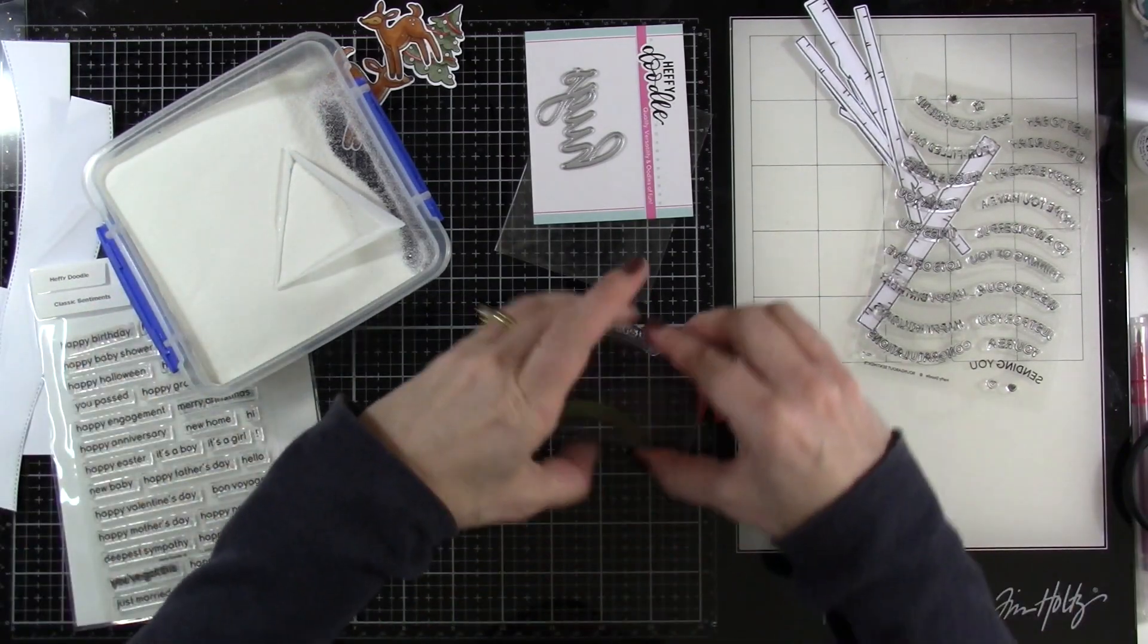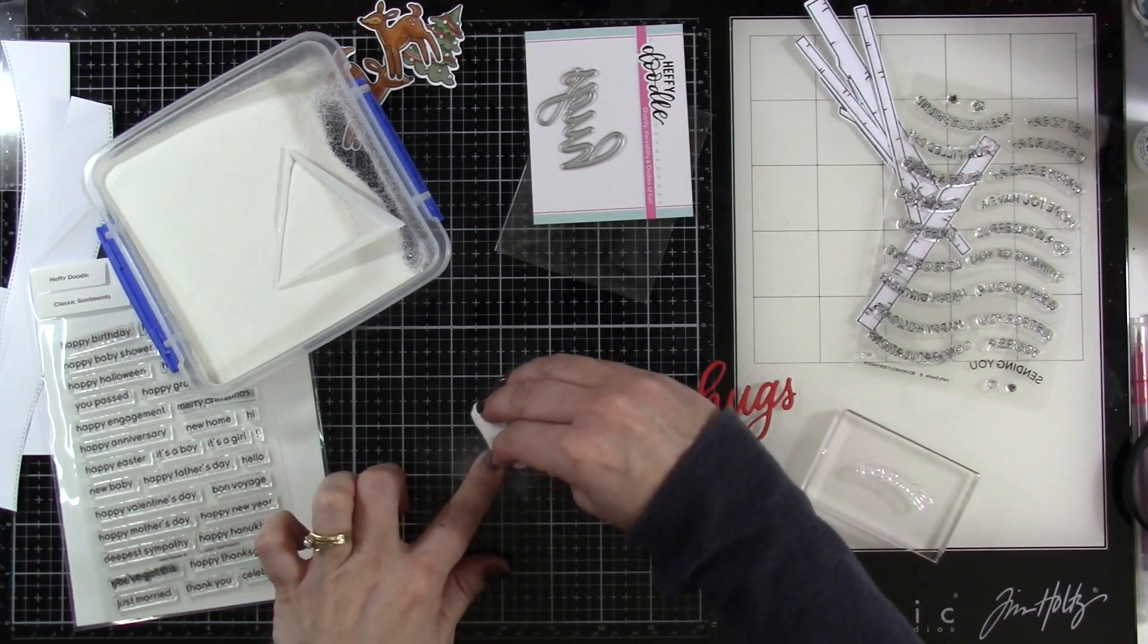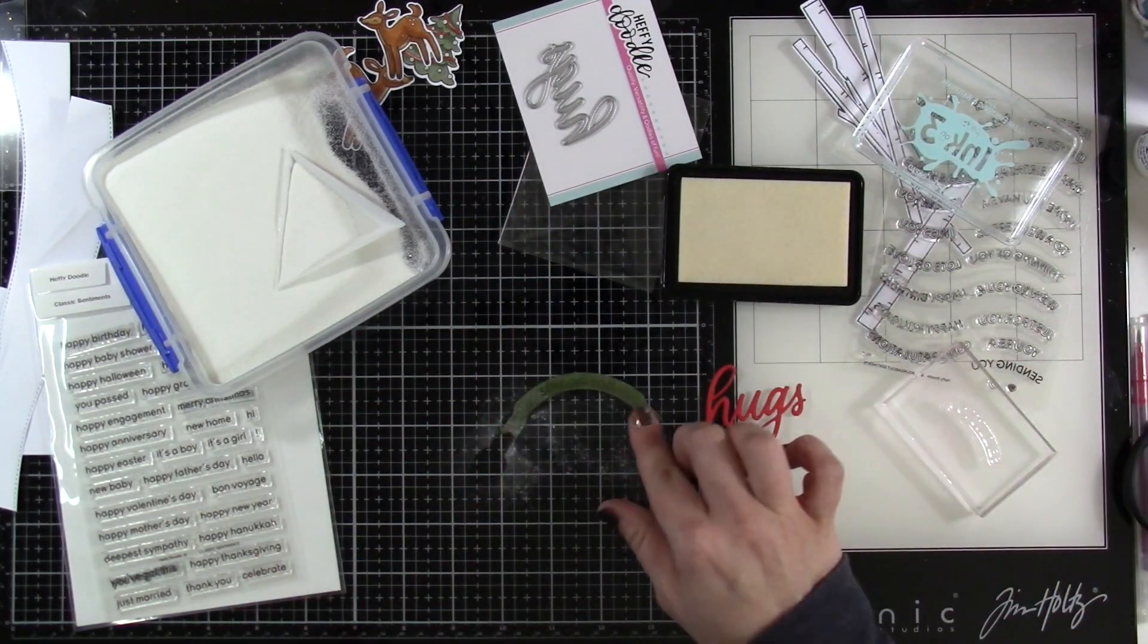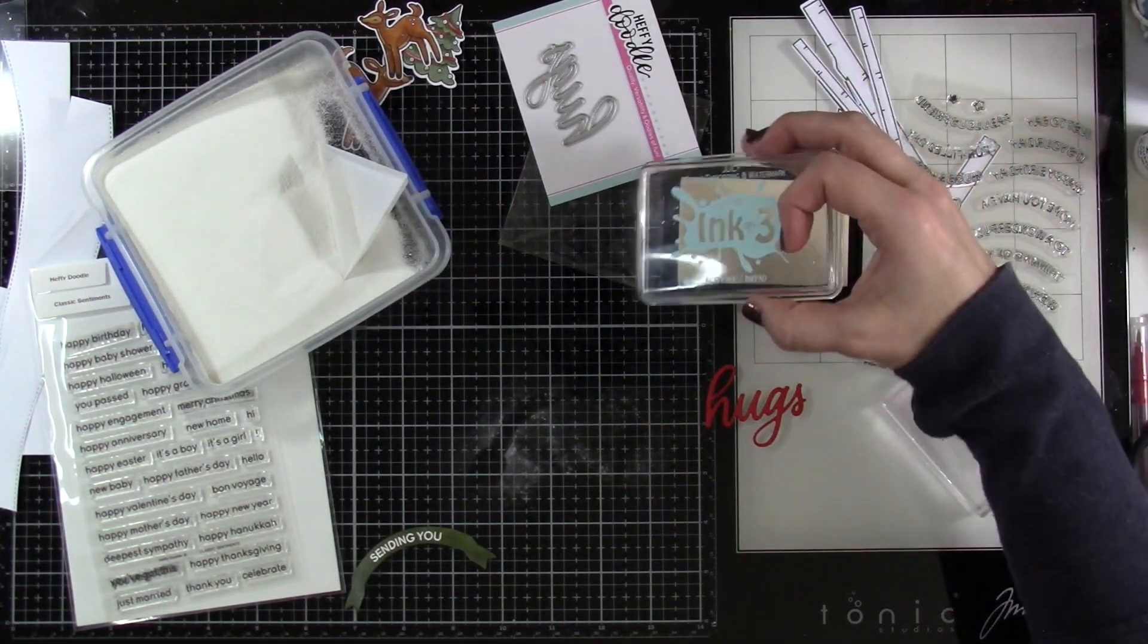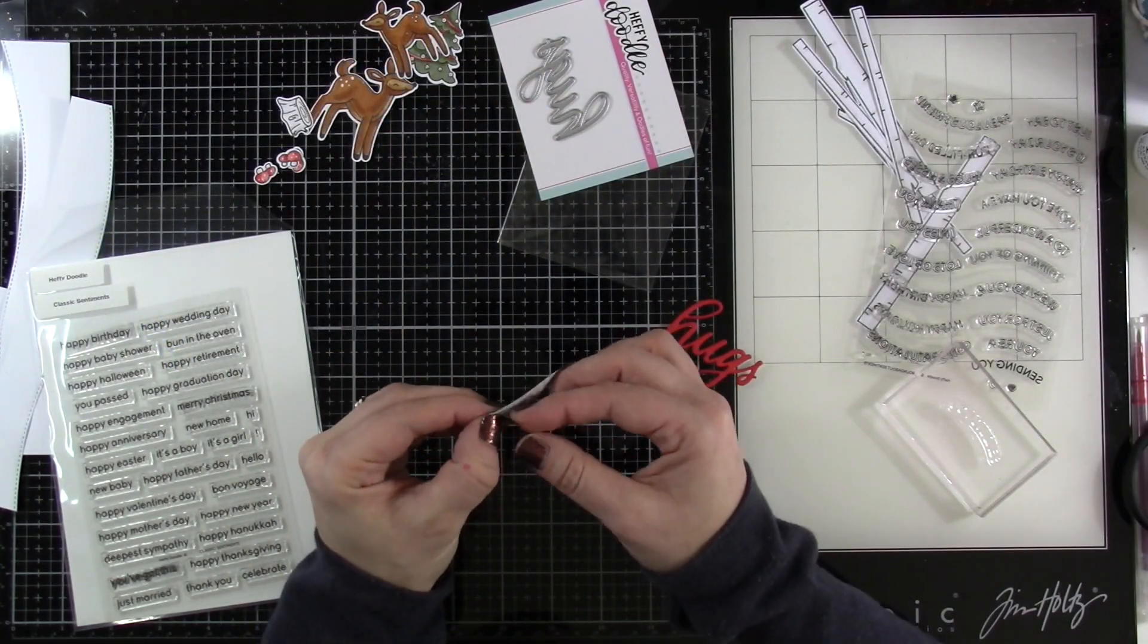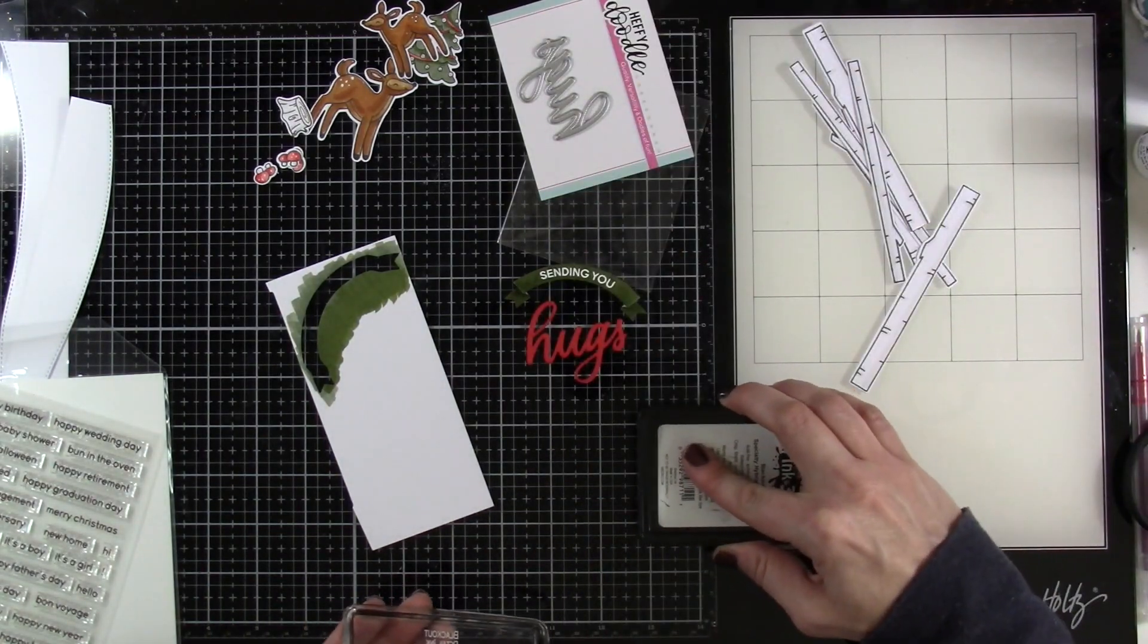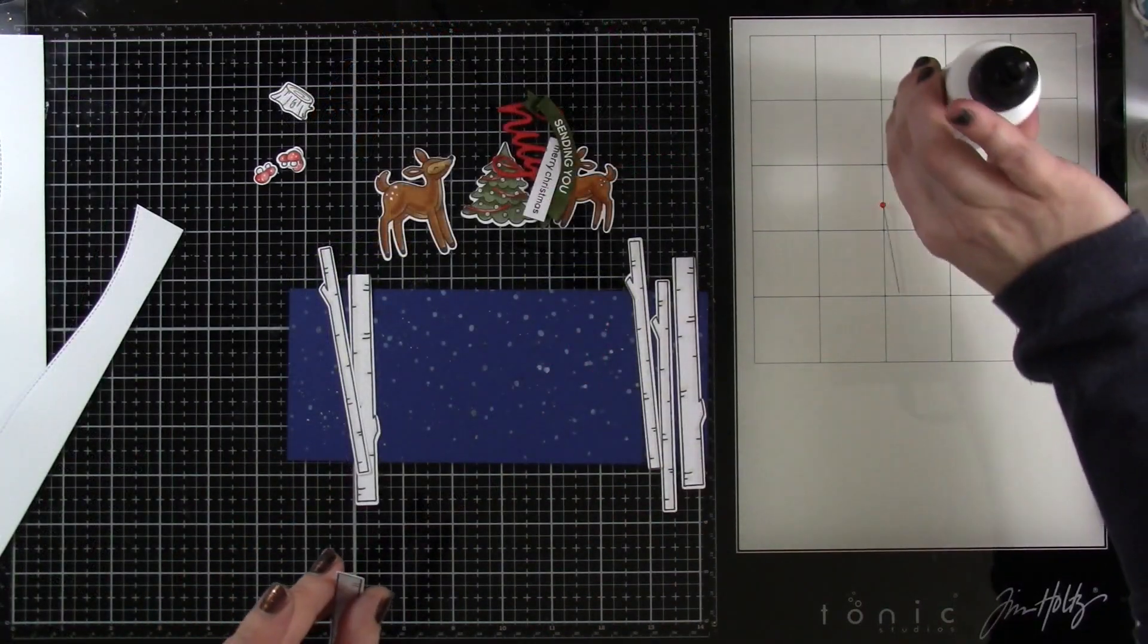All right now I want to stamp my sentiment on our roundabout die so I've pulled in the sending you and I'm going to use my magic powder bag, ink that up with some clear embossing ink and stamp that down in the center. Then cover that with some white embossing powder and then I'll heat set that till that is smooth and melted. This die gives it a couple of embossed lines so that you can make it look 3D. I need to stamp another sentiment, so that is where our classic sentiments come in for Merry Christmas, and I'll just stamp that at the bottom of this piece of white cardstock and trim that out.